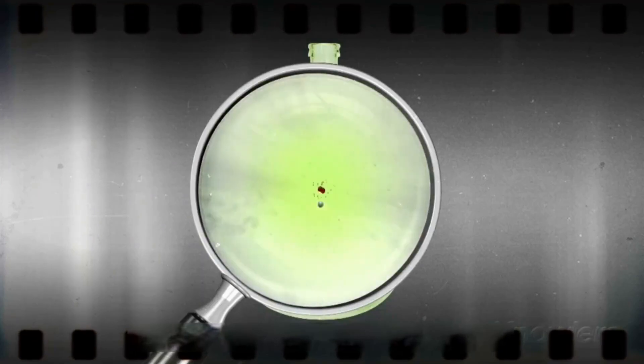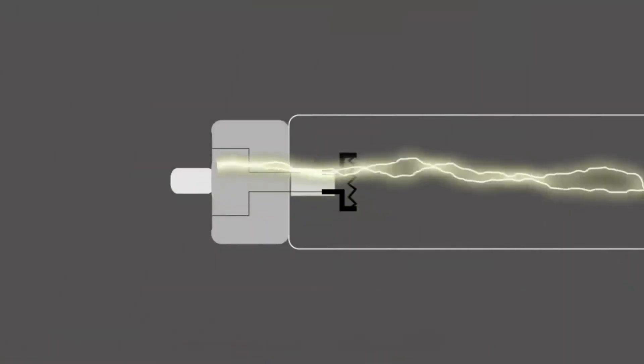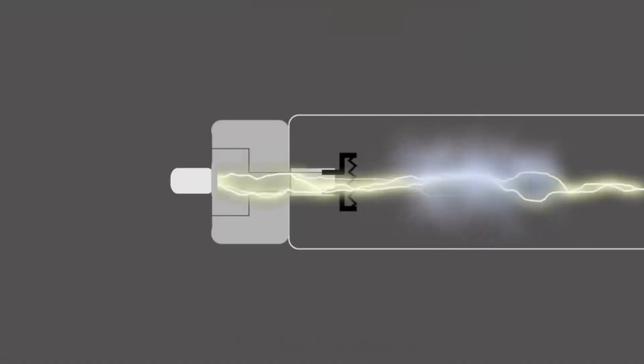Plasma cleaning is a dry cleaning process. In the vacuum chamber of the equipment, through a radio frequency power supply under a certain pressure, high energy disordered plasma is generated to bombard the surface of the product to be cleaned, achieving the purpose of cleaning.